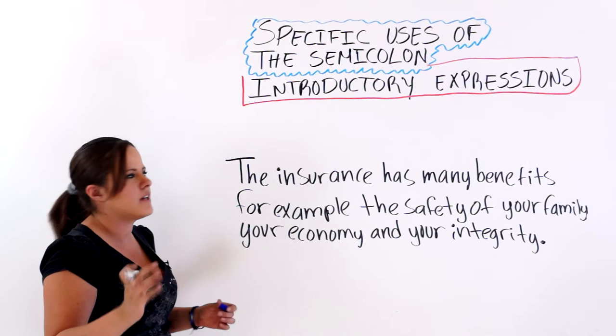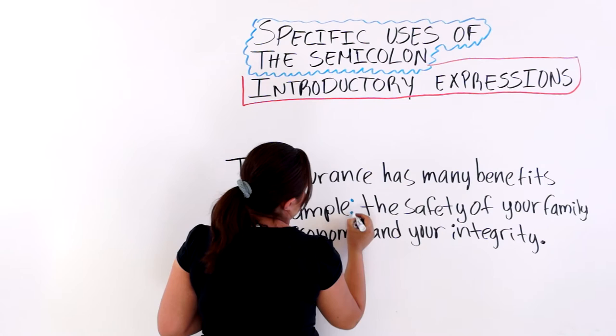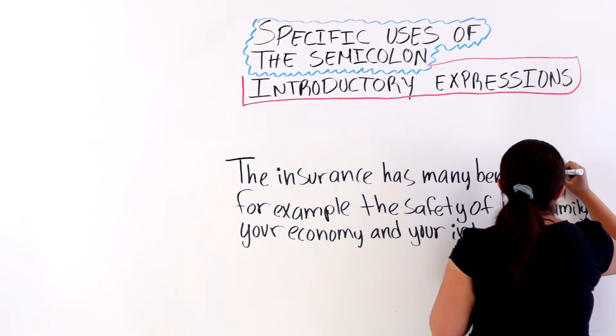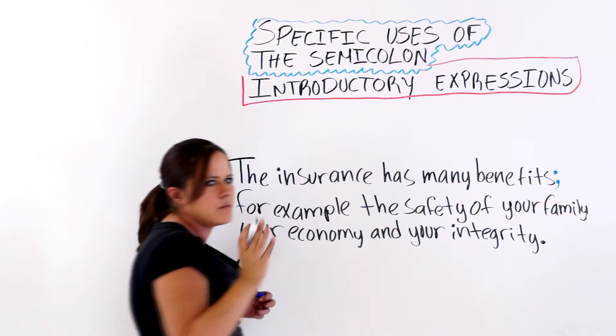The semicolon goes before the introductory expression — not after it. It doesn't go after 'for example'; it goes before it. And after the introductory expression, we must add a comma.